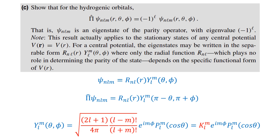The next question is: for hydrogenic orbitals, Pi-hat acting on psi_nlm of R, theta, phi equals (minus 1)^l times psi_nlm of R, theta, phi. That is, psi_nlm is an eigenstate of the parity operator with eigenvalue (minus 1)^l. Note this result applies to stationary states of any central force, where V(r) = V(R).